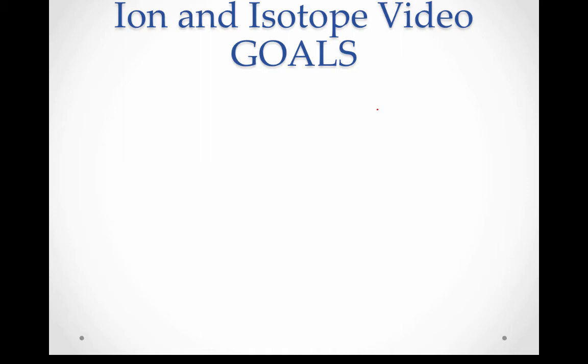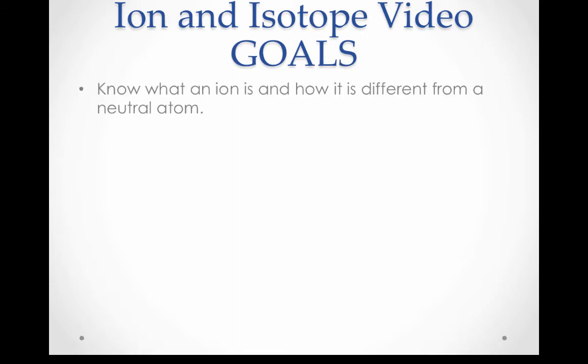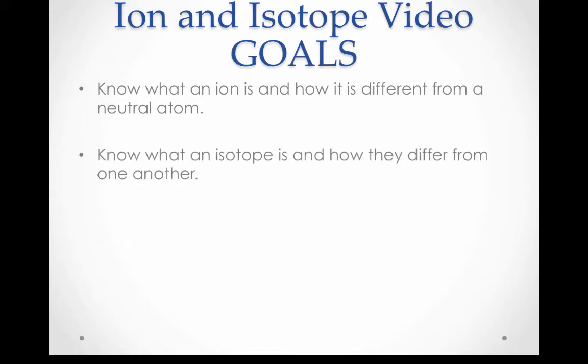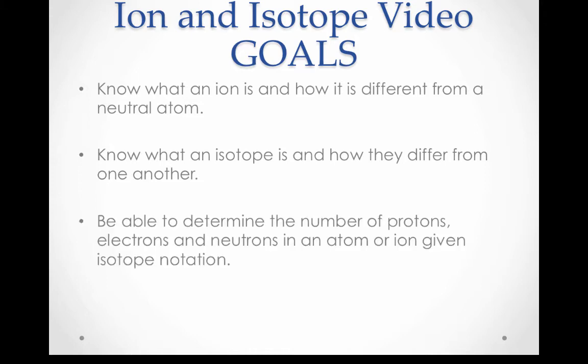Welcome to Unit 6, Video 3: Ions and Isotopes. By the end of this video, you should know what an ion is and how it is different from a neutral atom. You should know what an isotope is and how they are different from one another. And you should be able to determine the number of protons, electrons, and neutrons in an atom or ion given isotope notation.